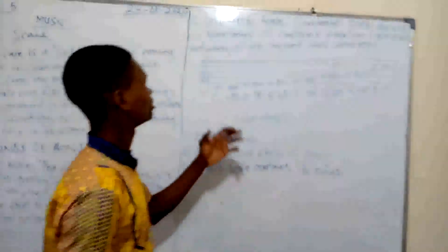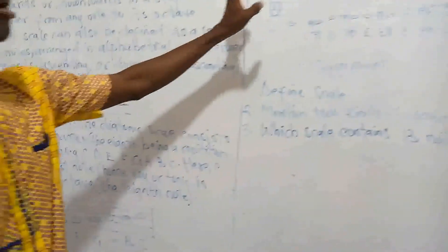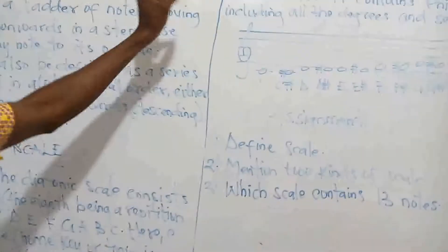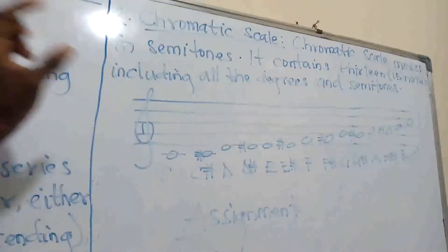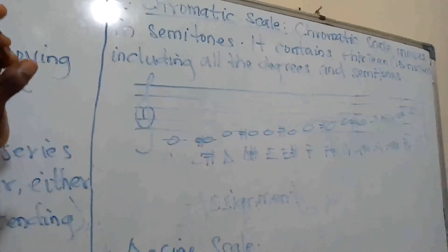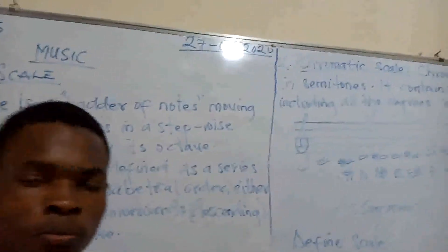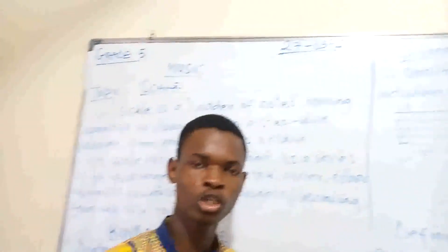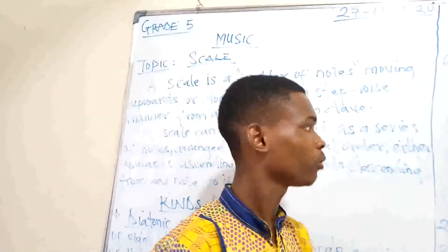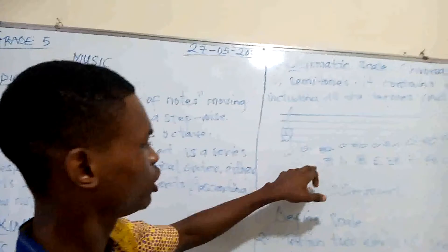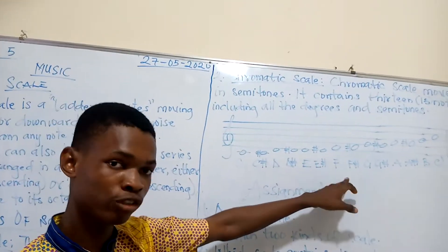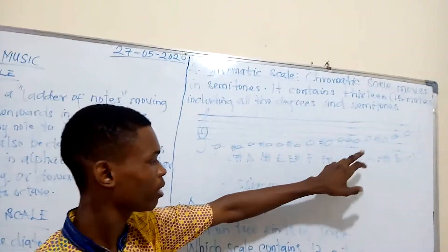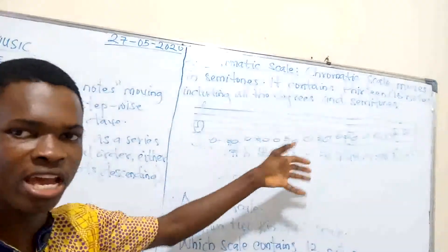The next one is the chromatic scale, which moves in semitones and contains 13 notes, including all the degrees and semitones. Like the diatonic scale, the last note is the repetition of the first. So we have: C, C sharp, D, D sharp, E, F, F sharp, G, G sharp, A, A sharp, B, and C.